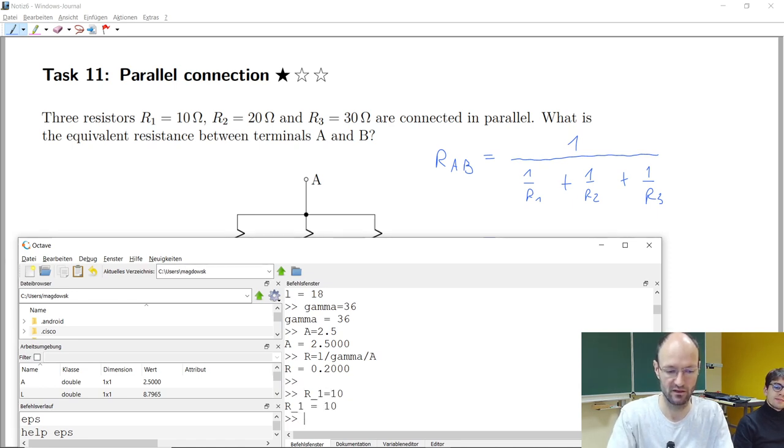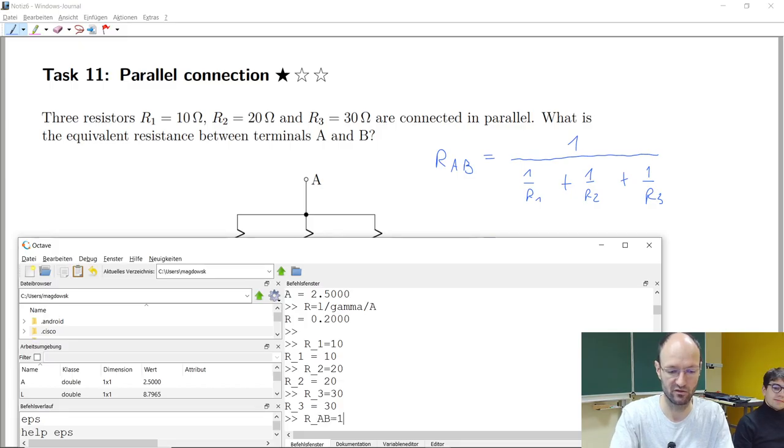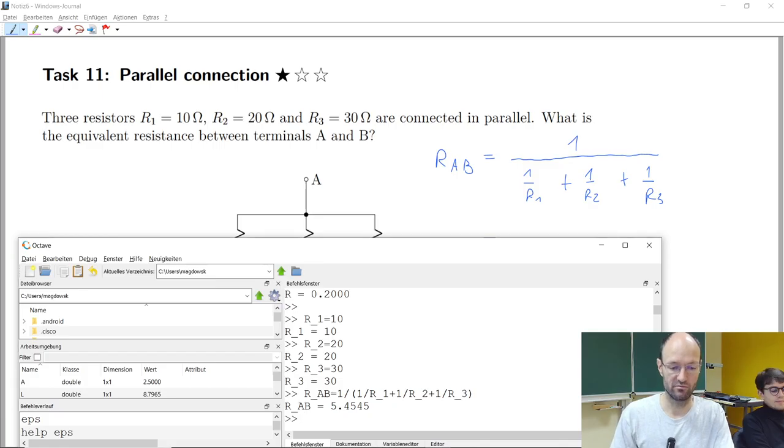And I will directly use my octave window here to calculate this. So R1 is 10, R2 is 20, R3 is 30. And if we want to have this one over R1 plus R2 plus R1 plus R1 plus R2 plus R3. And we get we should get 5.45 something.